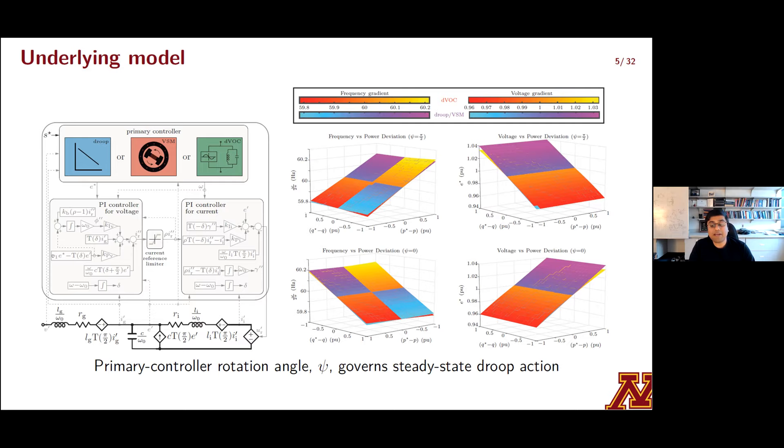It turns out that while these three primary controllers exhibit very different dynamic properties and dynamic performance, they can all be engineered to offer quite similar steady-state performance. In fact, one can tease out a rotation angle, which I'll call psi, in all of these three types, which if you tune correctly, you can endow them with steady-state droop characteristics. Simulation results on the right are merely illustrative of this. The surfaces that are shaded in purple correspond to droop and VSM, and the surfaces shaded in orange correspond to dispatchable VOC. We illustrate how different choices of psi can result in different trade-offs in steady-state.